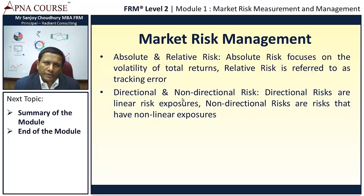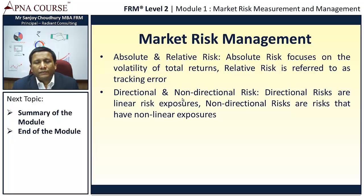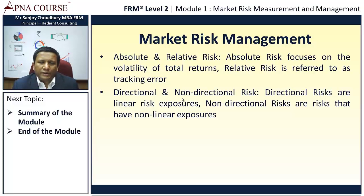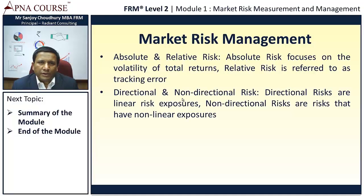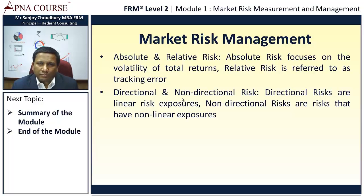Market risk management also deals with directional and non-directional risks. Directional risks are linear risk exposures, and non-directional risks are risks that have non-linear exposures, like derivatives. One basic form of non-linearity arises in fixed income instruments markets, where the price-yield relationship has an inverse and non-linear relationship — there is convexity, which means the change in price with respect to change in yield at various points on the curve is not equal. This brings non-linearity into the exposures.